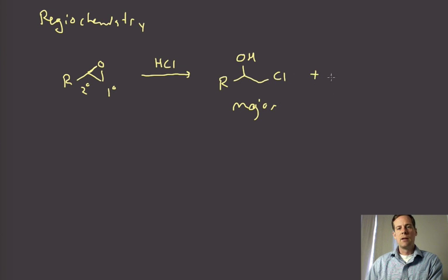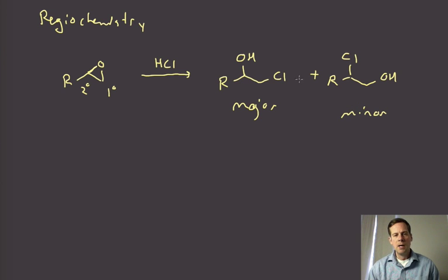We opened at the primary site, and then there will usually be some amount of the isomer where we opened at the secondary site, but this is usually going to be the minor product. So what this probably looks like to you is that this opening is occurring through an SN2 type of mechanism where we're going for the least hindered site.